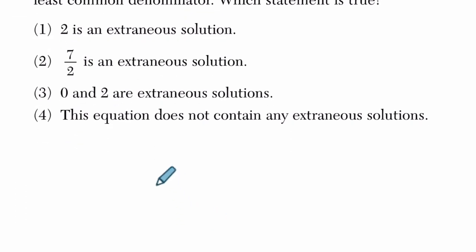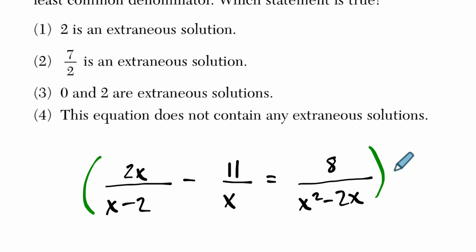let's try that strategy. Take 2x over x minus 2, minus 11 over x, and that equals 8 over x squared minus 2x. So what is the least common denominator? Well, it's just x minus 2 and x, and I know that because we have x minus 2, we have x, so their product, and this denominator over here is the product of x and x minus 2. So it checks out.